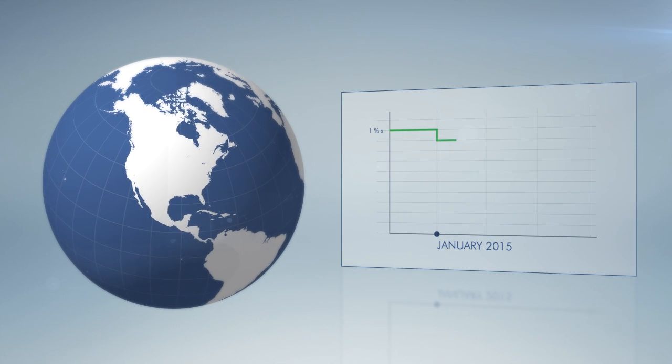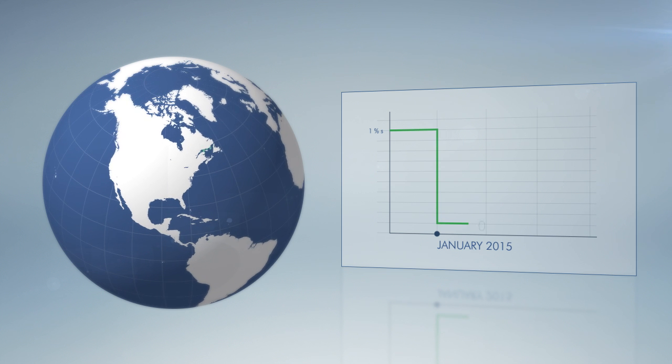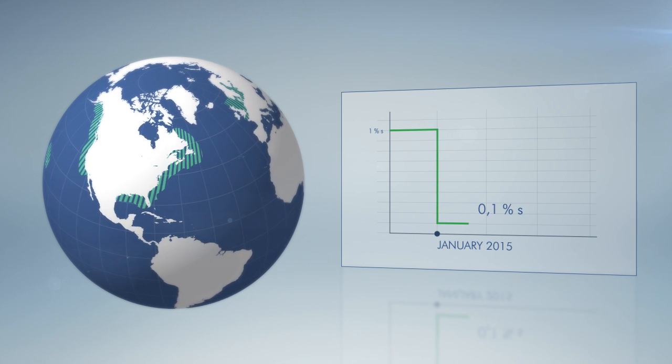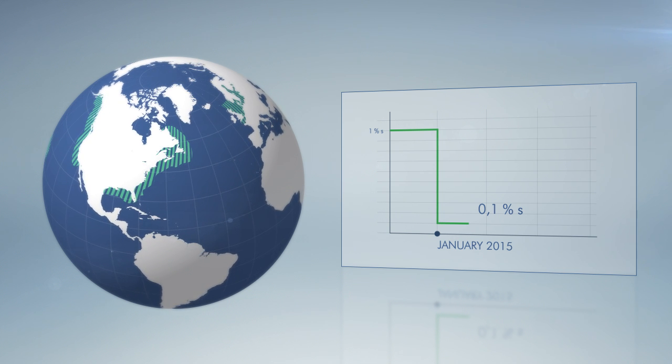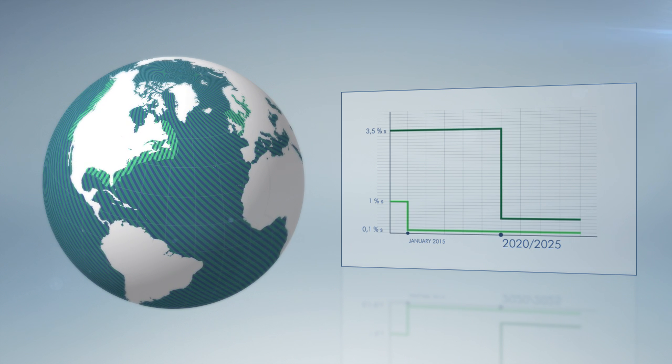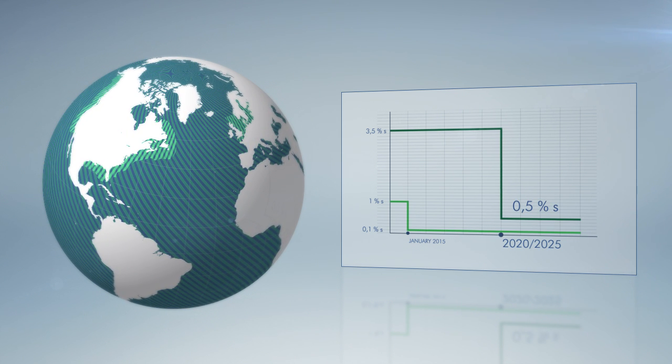Effective January 2015, there will be a limit of 0.1% sulphur content in vessels' exhaust gas when sailing inside the emission control areas. From 2020 or 2025, there will be a global limit of 0.5% sulphur content.